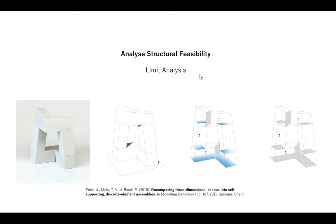Each iteration taking hours would make the optimization too slow, so we need fast structural analysis. What I chose is based on the concept of limit analysis: we consider each block to be fully rigid — it never changes its shape, it never cracks, it is unbreakable. This means the only places from which the overall assemblage can fail are the interfaces or joints between blocks, colored in blue. These are the failure planes.